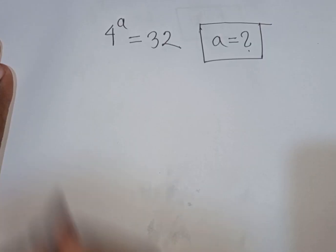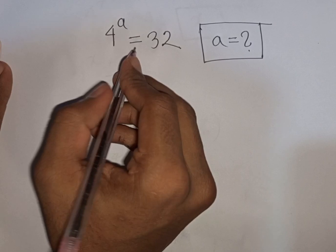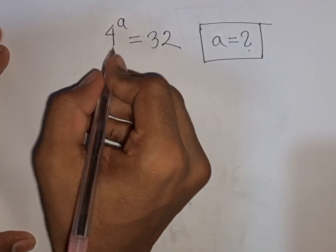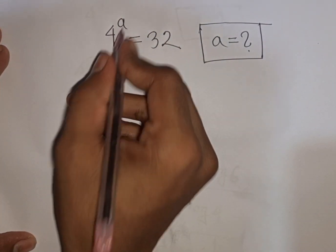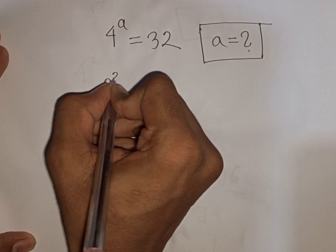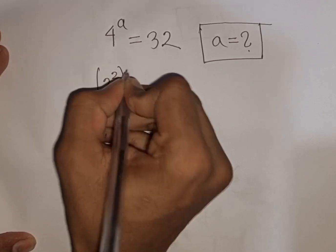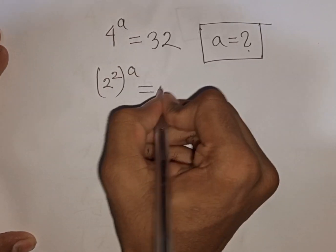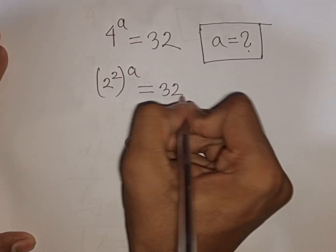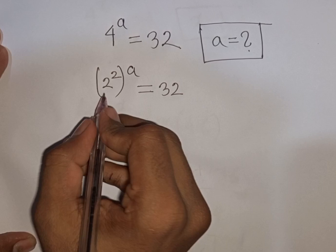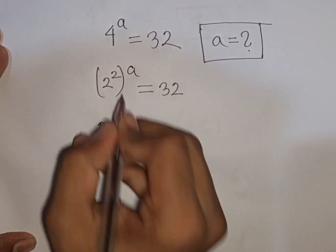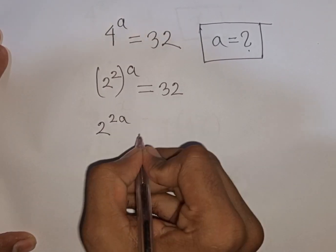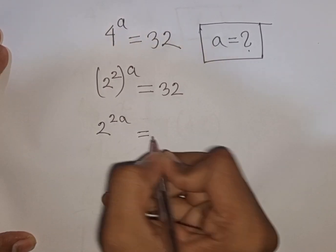How to solve 4^a = 32. Find the value of a. We have 4^a, which is the same as (2^2)^a, equal to 32. Now (2^2)^a means 2^(2a).